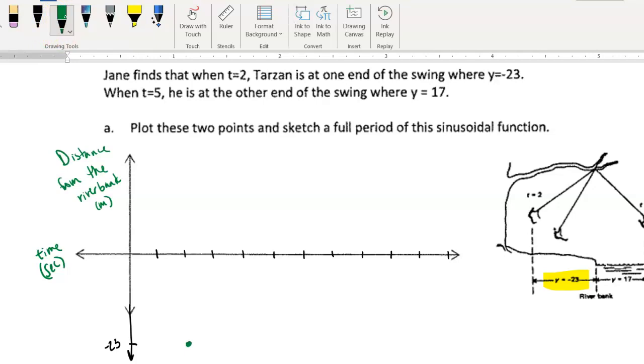And so then it says when T is 5. So after five seconds, he's at the other end of the swing where Y is 17. Let's put the dash mark up here. We'll just call that 17 and count over where our time is 5. One, two, three, four, five. So this represents the maximum distance across the water that he's going to reach, and this would represent the minimum distance from the riverbank, so overland that he would be from the riverbank.